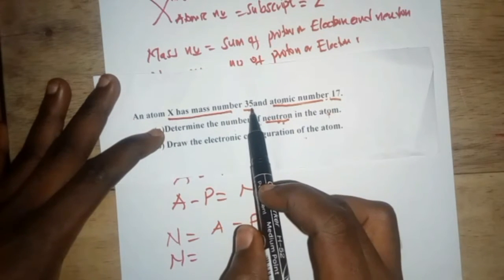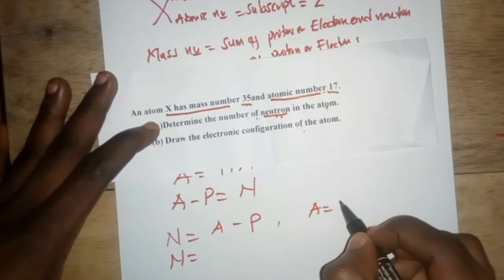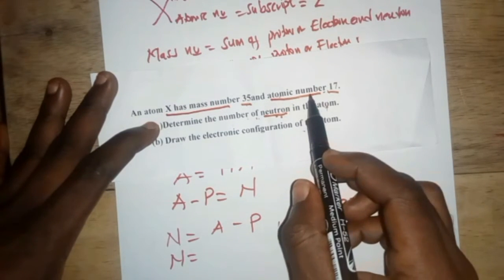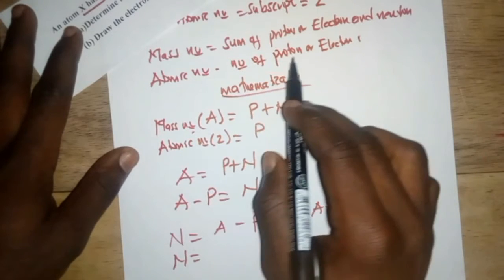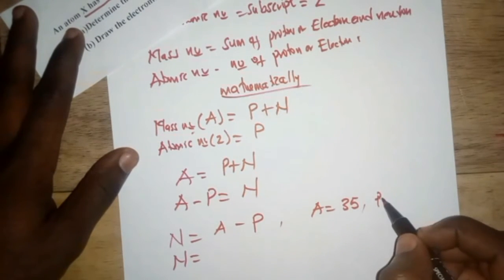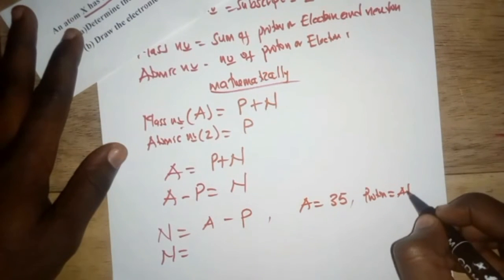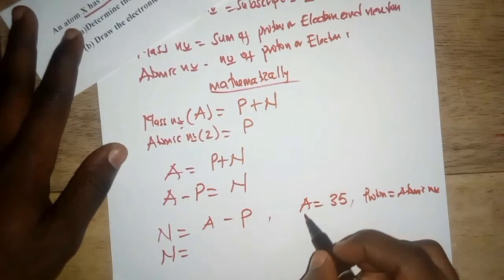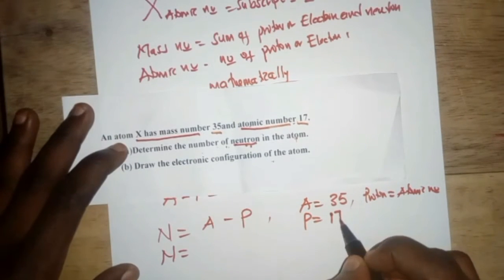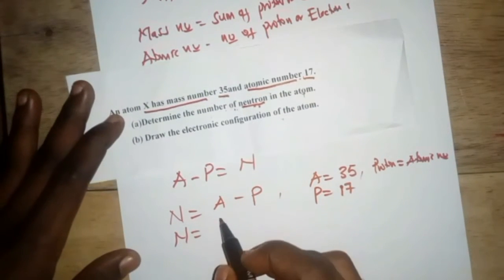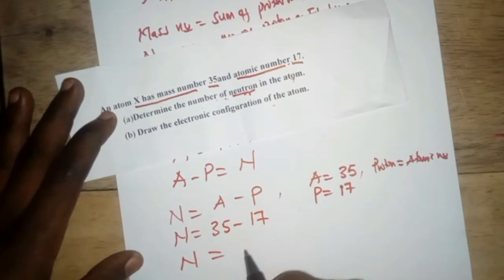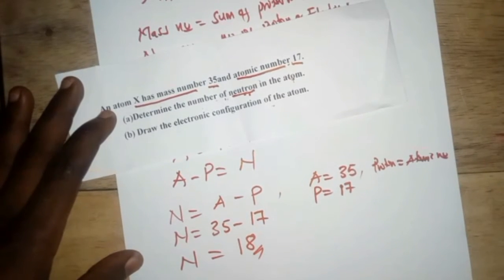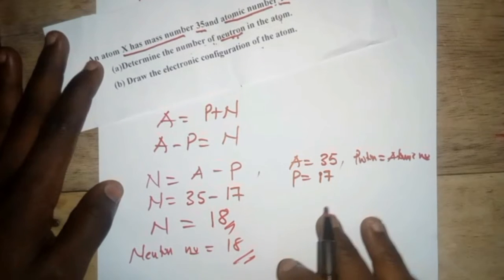Our mass number A is 35, and the atomic number is 17. Since the atomic number equals the number of protons, our proton count is also 17. Therefore, the number of neutrons equals 35 minus 17, which gives us 18. So the neutron number is 18.